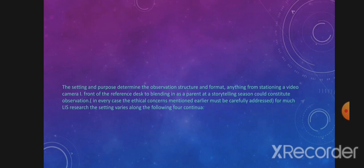In every case, the ethical concerns mentioned earlier must be carefully addressed. For much LIS research, the setting varies along the following four continua: number of participants, which can be crowded as in a busy branch library or sparsely populated as in a quiet map library; public versus private, ranging from as public as a reference desk to as private as a professor's office; size of the observable actions, from small actions such as keyboard motions to large actions such as routes taken through the library building; and staff or public, which can involve library staff, the public, or some combination thereof.